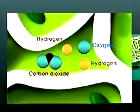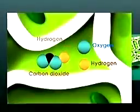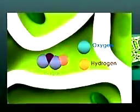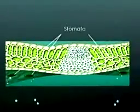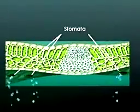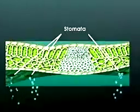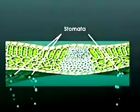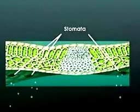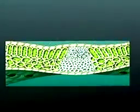The hydrogen then combines with carbon dioxide to produce a simple sugar. The excess oxygen enters the air through the stomata or pores of the leaf. People, animals, and all other living organisms need oxygen in order to live.